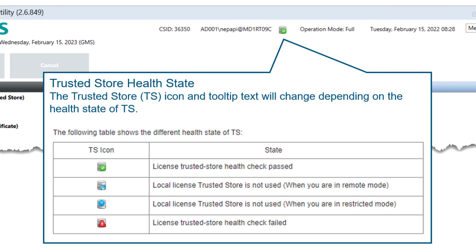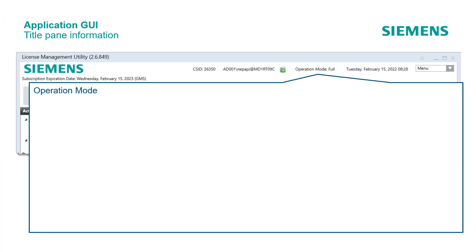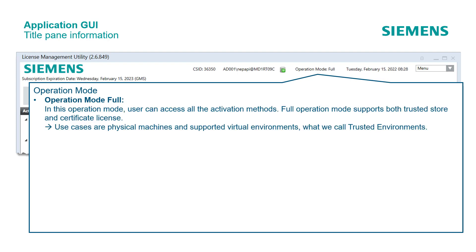The following table shows the different health states of the trusted store. The license management system differentiates between trusted and untrusted environments. Three modes are possible according to the environment on site. In the operation mode Full, users can access all the activation methods. Full operation mode supports both trusted store and certificate licenses. The typical use cases are physical machines and the supported virtual environments explained in the chapter introduction of this learning — we call these trusted environments.